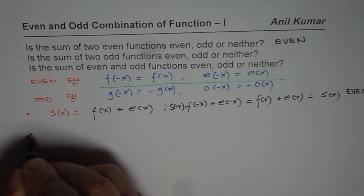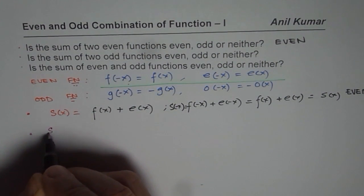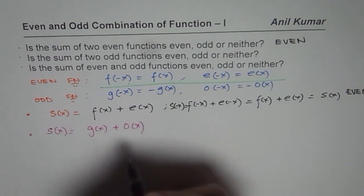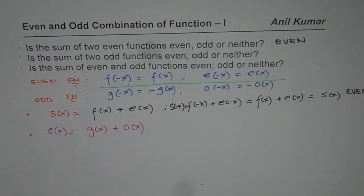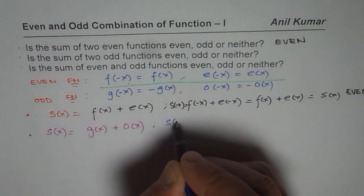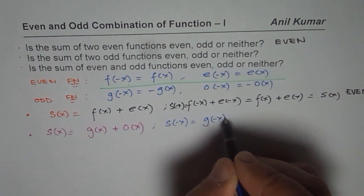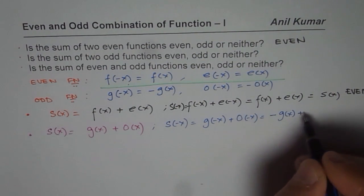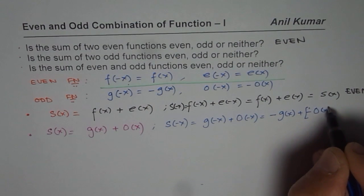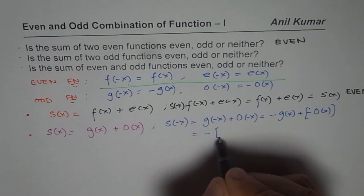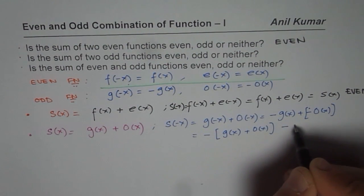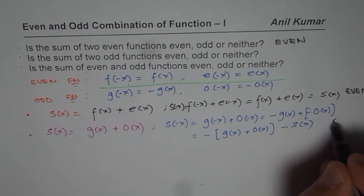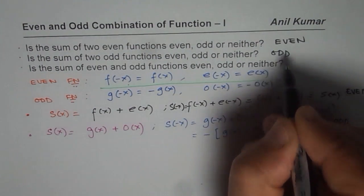Now let us do the same exercise with two odd functions. We consider s(x) = g(x) + o(x) and evaluate s(-x) = g(-x) + o(-x). Since g(-x) = -g(x) and o(-x) = -o(x), we can factor out the negative to get -(g(x) + o(x)), which equals -s(x). Since s(-x) = -s(x), we conclude this sum is odd. So that combination always gives an odd function.